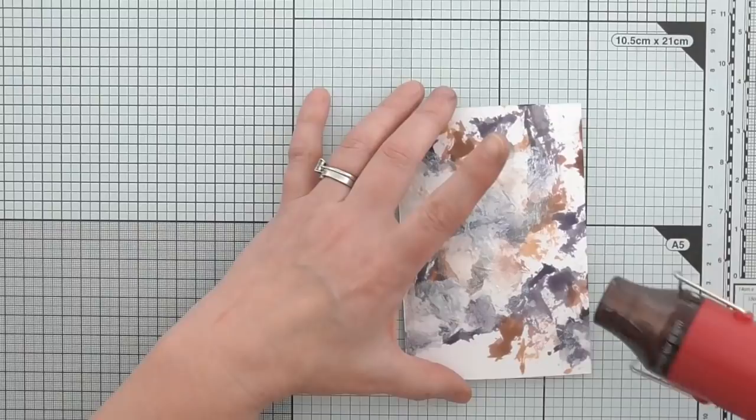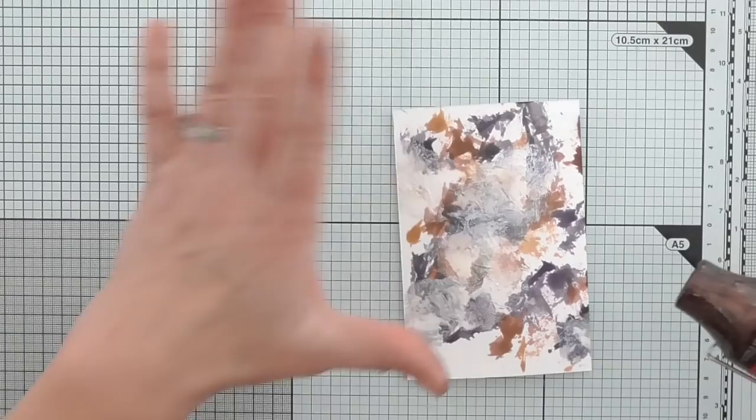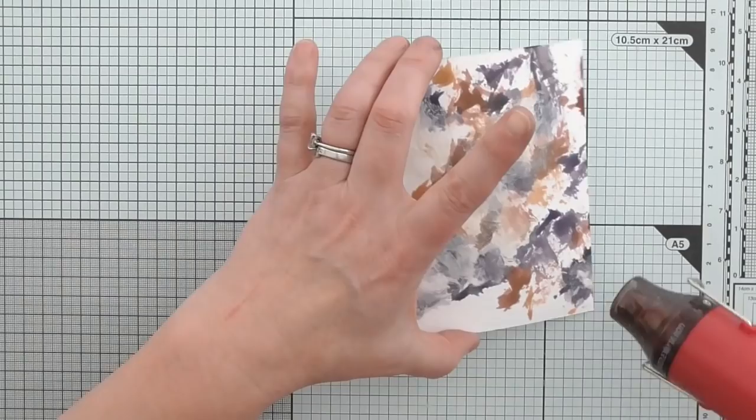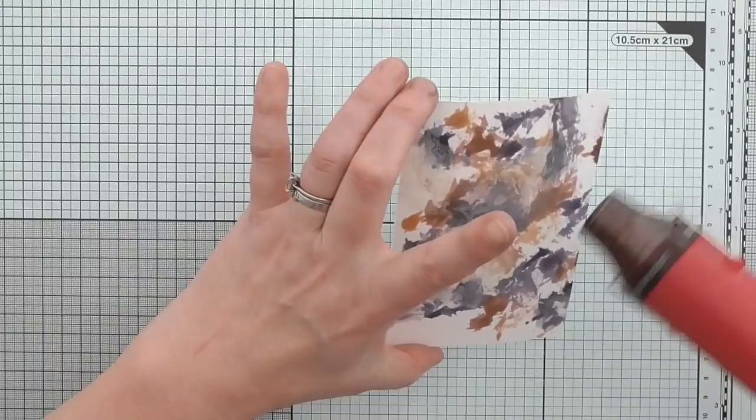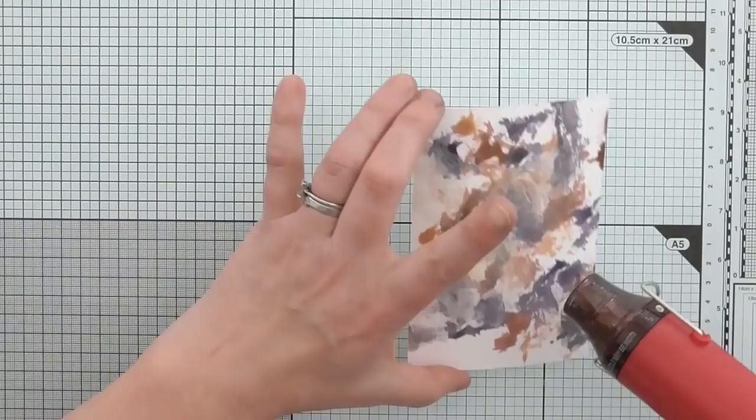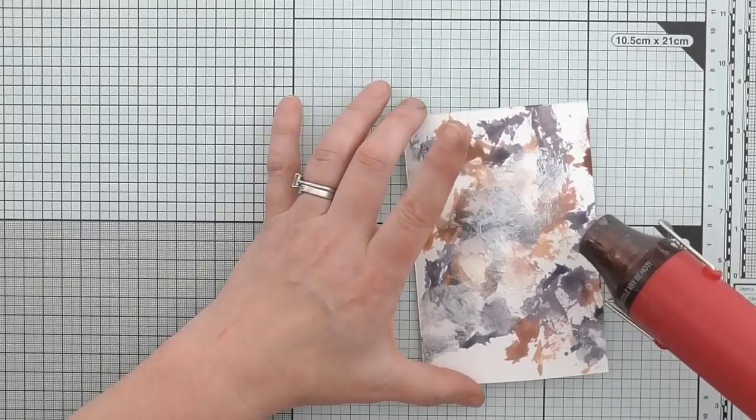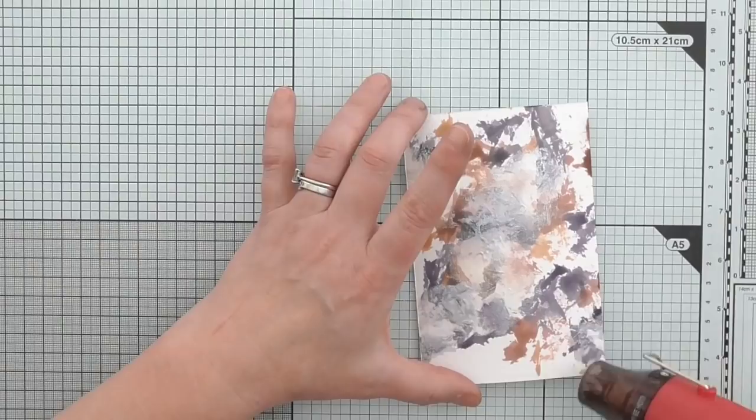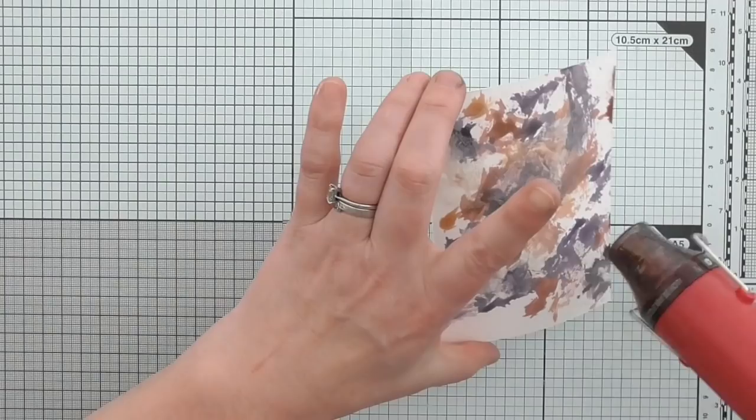You could add a lot more of the reinker so you've got bigger coverage. I quite like how it looks. Kind of, I don't know how to explain whether some of the white is still showing. I like it. I like this area where it's all mixed together as well. That's awesome. A little bit sticky. You want it to dry.